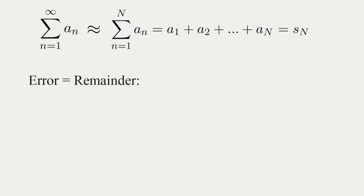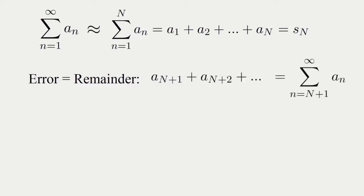In this case, the error of our approximation is simply the sum of all the remaining terms we did not add up as part of the partial sum, i.e. the sum of all the terms coming after the n-th term. The sum of all these remaining terms is called the remainder, and the basic principle behind the integral test gives us a way to estimate this remainder.